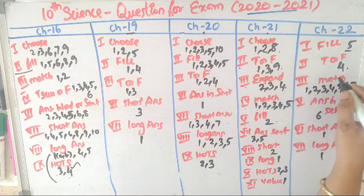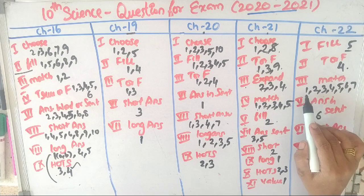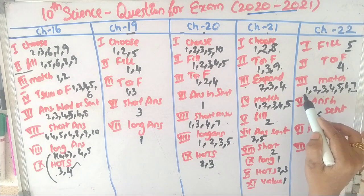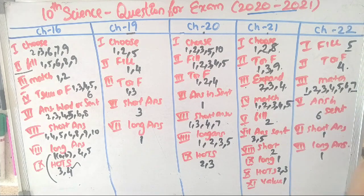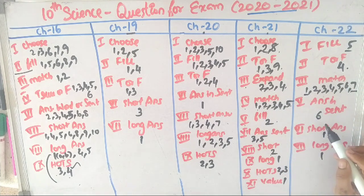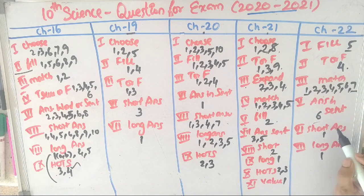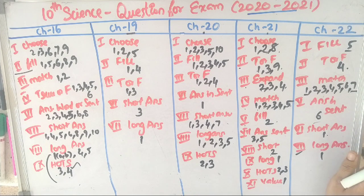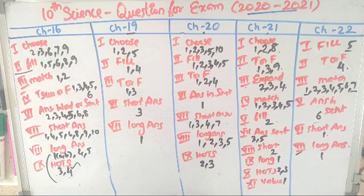Second, value added is 1. True or false is 4. Match the following is 1, 2, 3, 4, 5, 6, 7. Add the fifth, answer in the sentence is 6. Short answer is 1. Seventh, value added is 1.